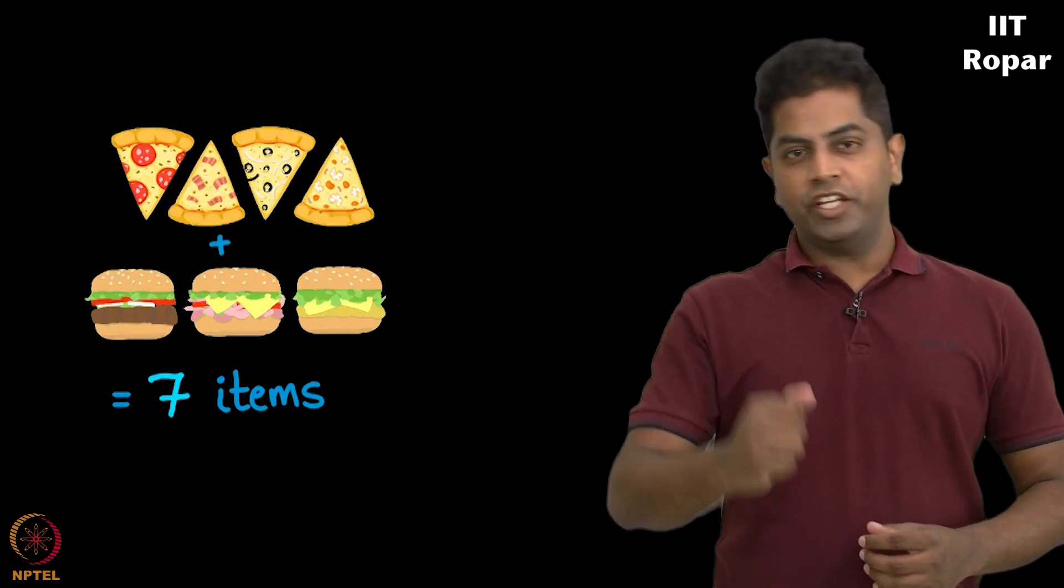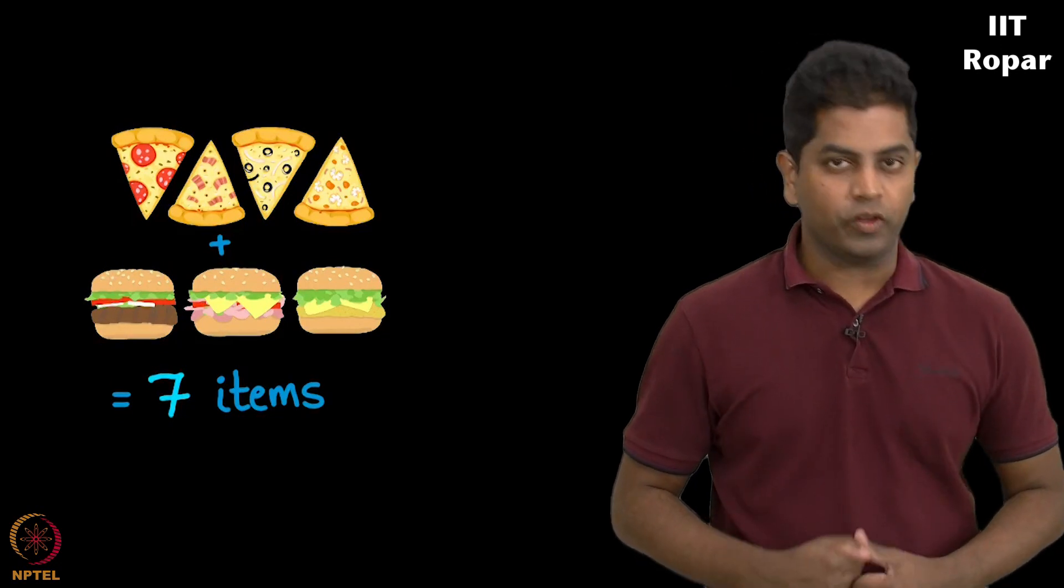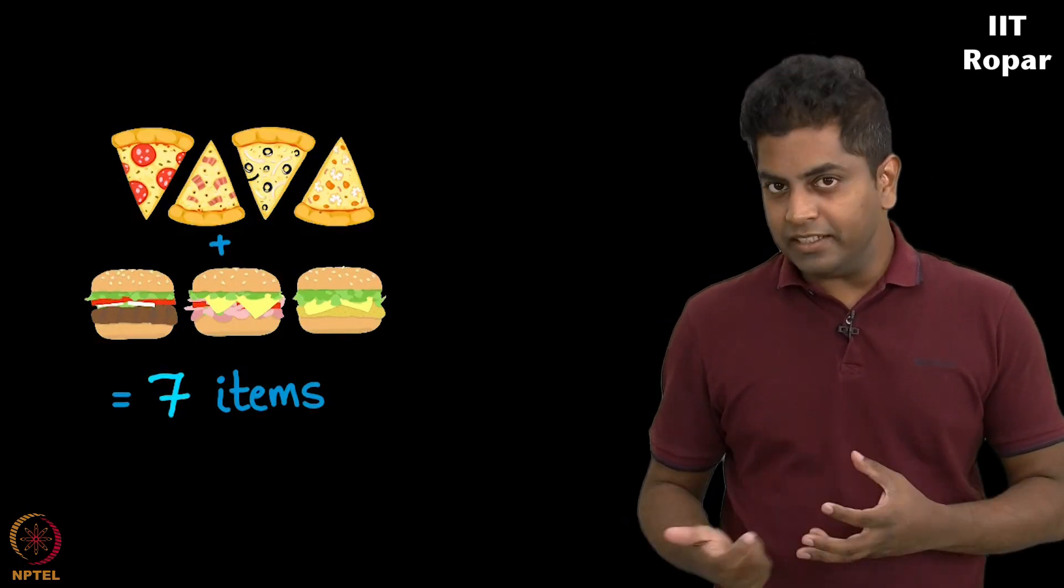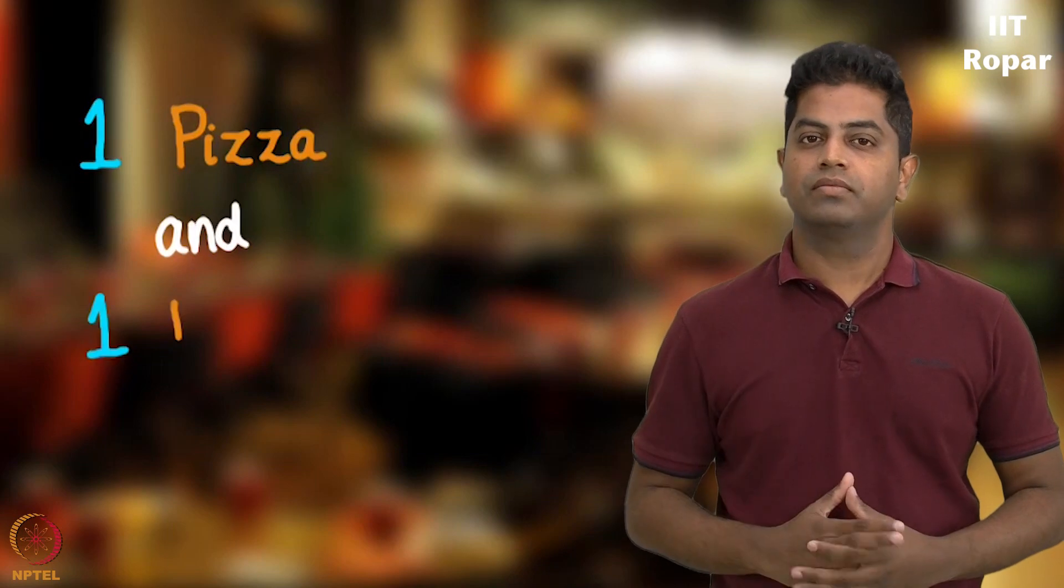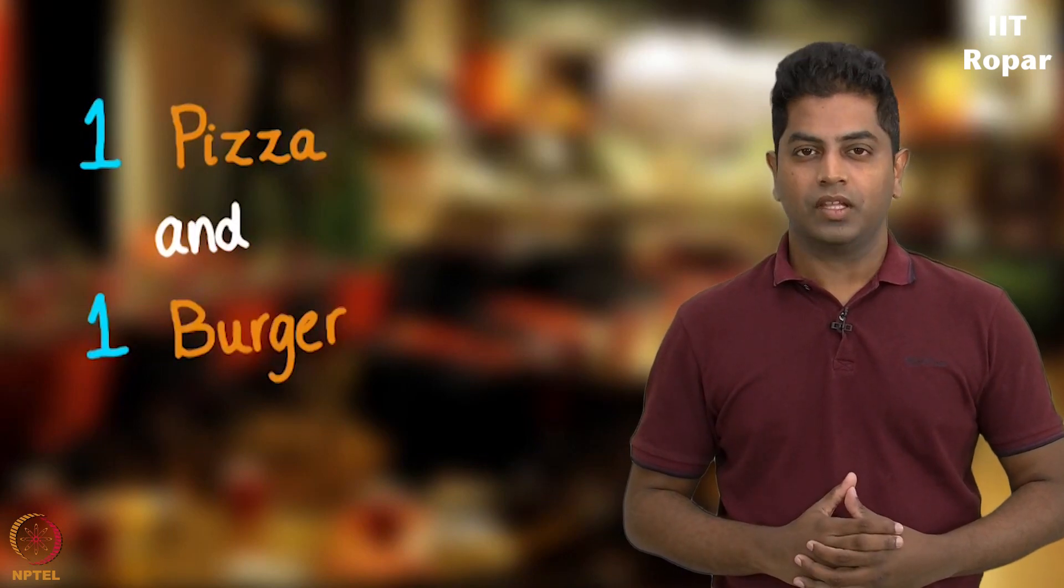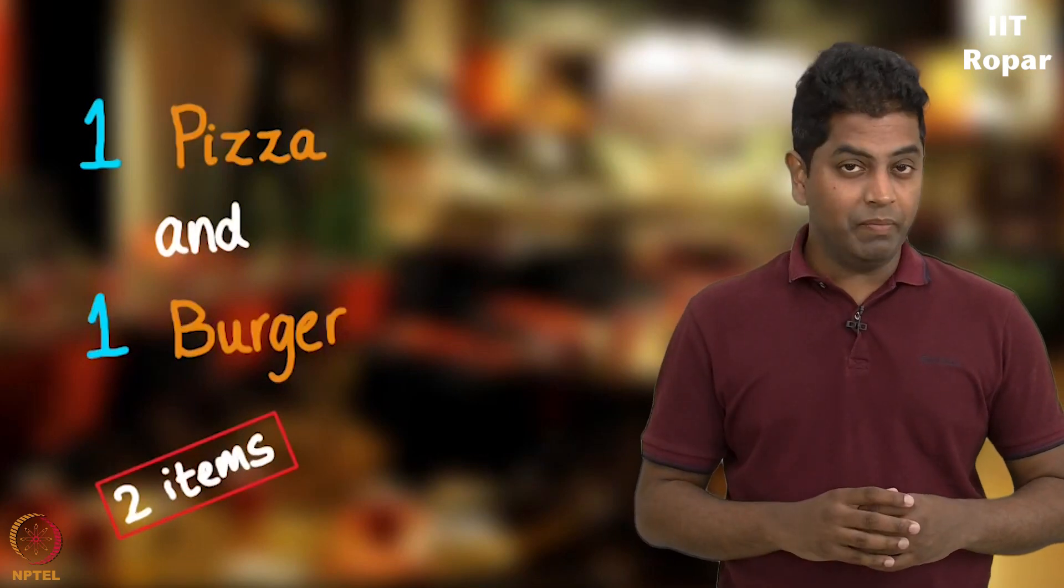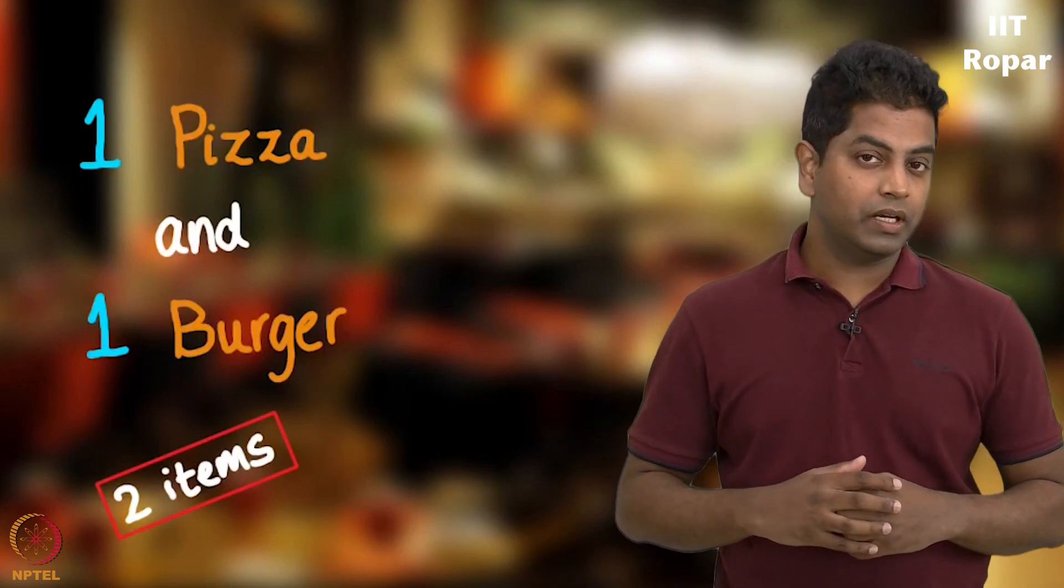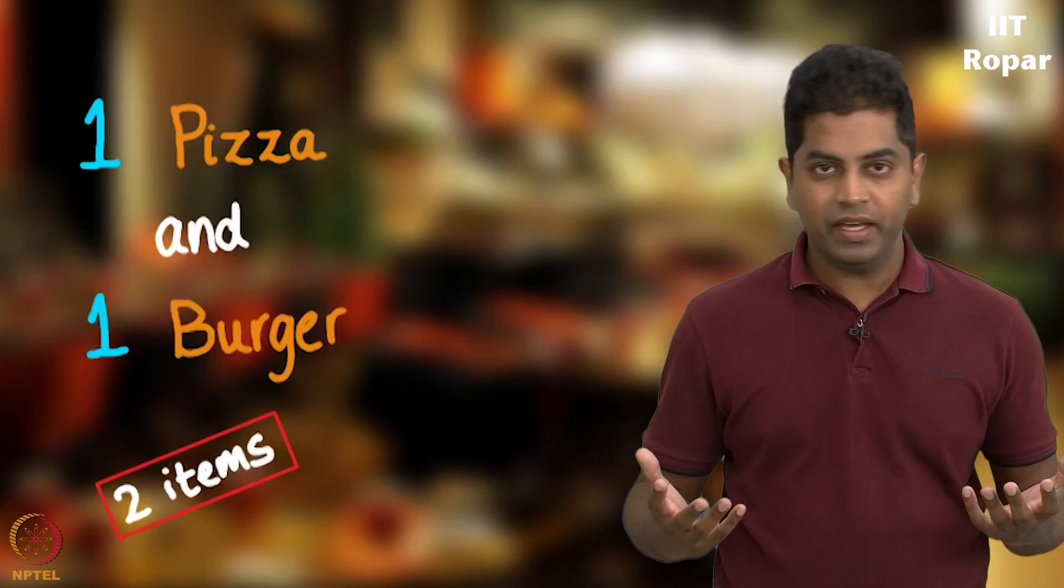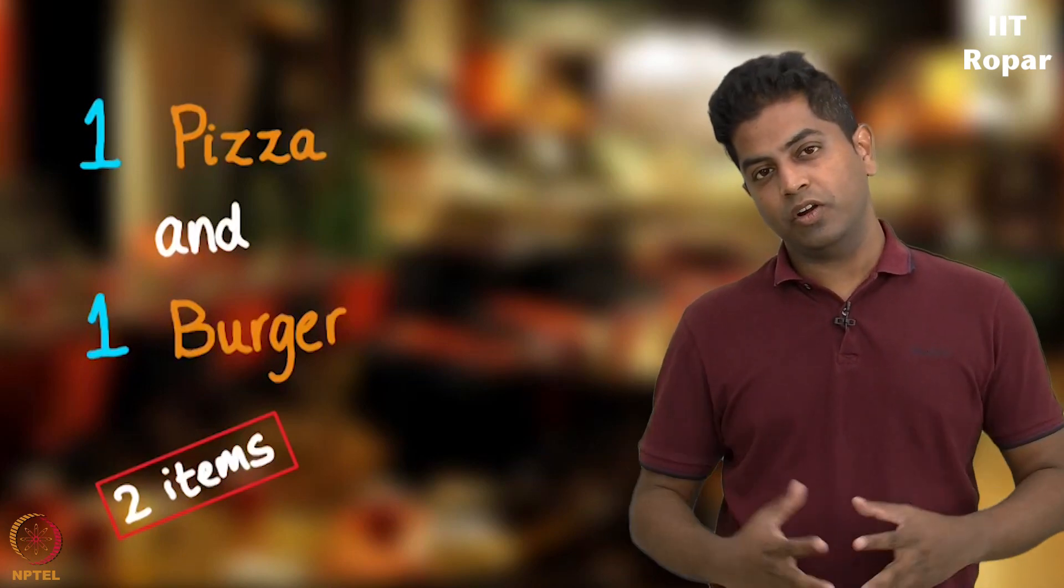Let me now change this problem to the following. I enter the restaurant and I decide to buy myself one pizza and one burger. It's not just one item but two items - I am sure I will be buying one pizza and one burger. In how many ways can I make my order?